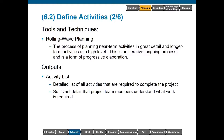Outputs from this process include the activity list. This is going to be a detailed list of all the activities that we must do to complete this project. All we're trying to do is figure out all of the activities. Later on, we'll go ahead and put them into the right sequence, figure out how long they'll take, and then actually build a schedule. We just need a list right now. Within this list, it should be sufficiently detailed so that a team member can understand what work is required.